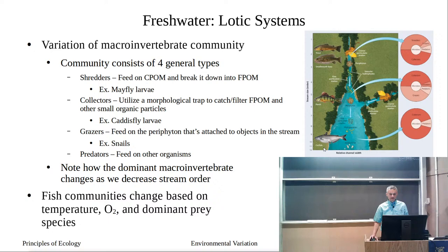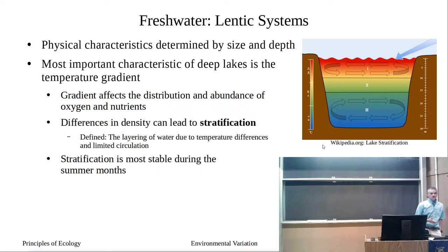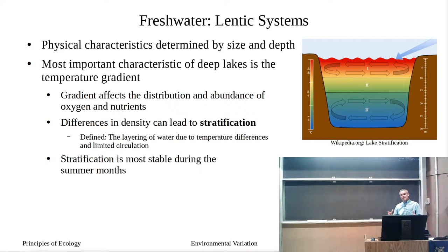Fish communities also reflect those changes along the river continuum. Now, the lentic systems — these are systems where water is not flowing, so freshwater ponds and lakes. The characteristics of these lentic systems are really determined by the size and depth of the lake itself — what we call the basin. What the basin looks like ultimately determines how the lake operates and its chemical gradients.